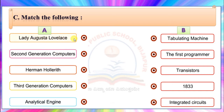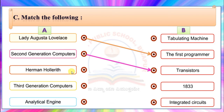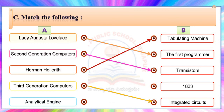Lady Augusta Lovelace — what is the correct answer, children? Let us draw an arrow to the respective answer. She is the first programmer. 2nd generation computers — children, can you guess the answer? Yes, it is transistors. Hermann Hollerith — what is the answer, children? Yes, Tabulating machine. Hermann Hollerith invented the tabulating machine. 3rd generation computers — can you guess the answer? Yes, it is integrated circuits. 3rd generation computers used integrated circuits.